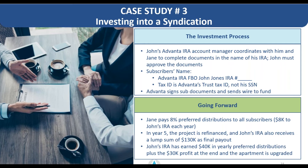Moving forward, Jane and her team pay eight percent preferred distributions to all subscribers, which boils down to eight thousand dollars per year for John's investment. In year five the project is refinanced and John receives a lump sum payout of his initial investment of one hundred and thirty thousand dollars. Over the course of those five years, John's IRA has earned a total of seventy thousand dollars — forty thousand in preferred distributions and a thirty thousand dollar profit at the final payout — that is either completely grown tax-free if it's in a Roth IRA, or tax-deferred with no capital gains or income taxes paid at the time of payout.